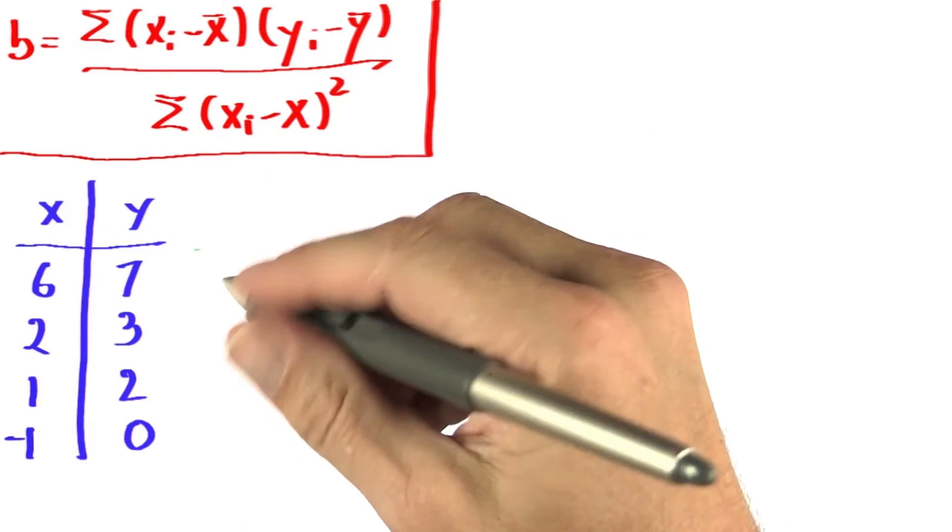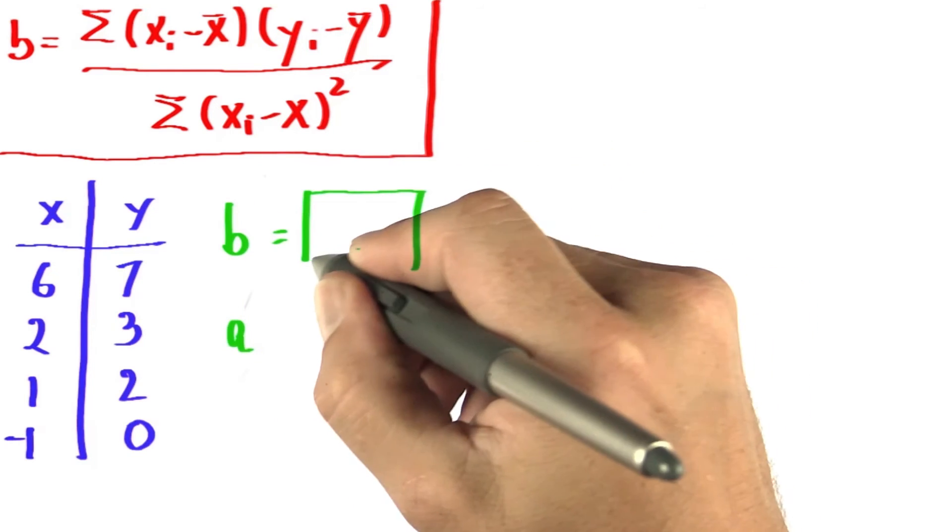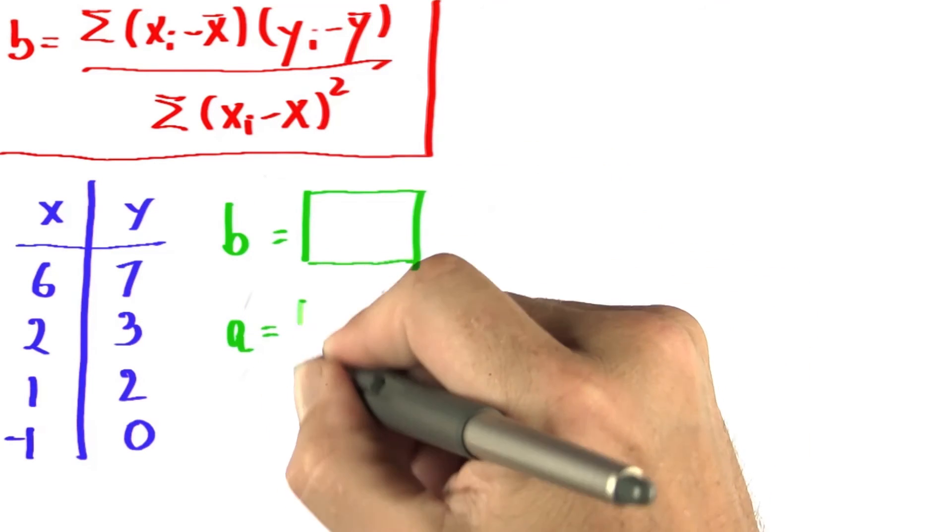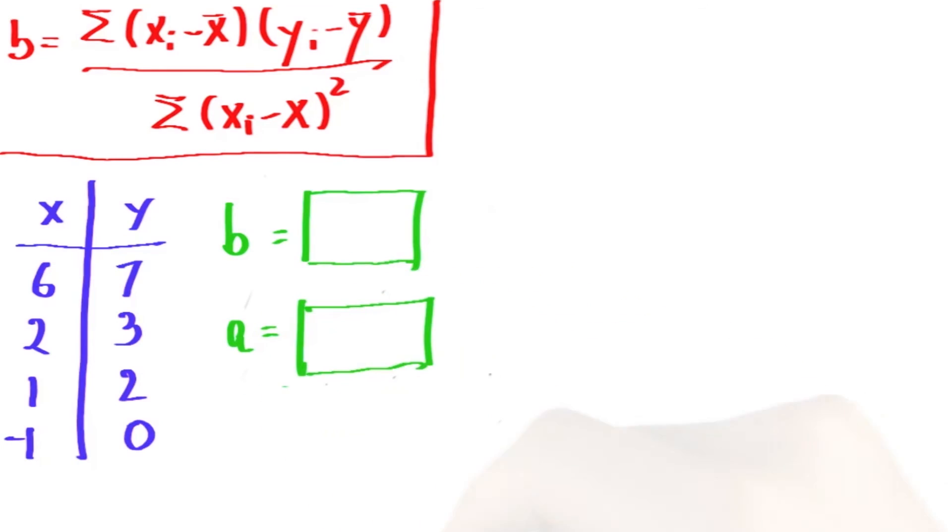So before we apply the formula, let's just quickly guess what b and a would be if y is always one larger than x. What are the coefficients b and a?